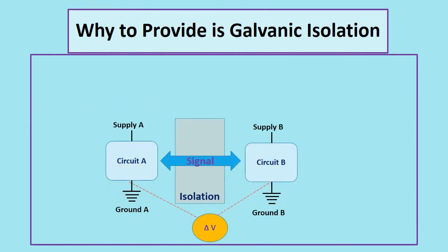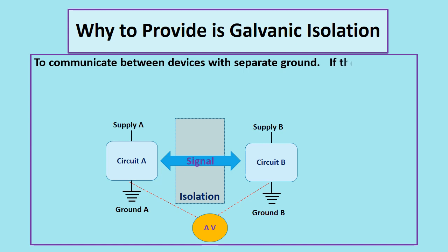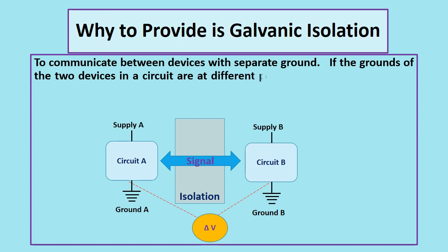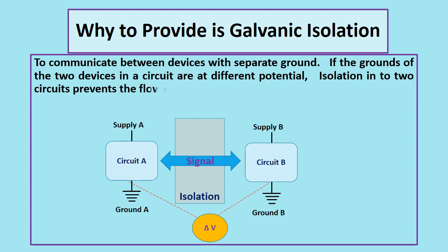The second reason to provide galvanic isolation is to communicate between devices with separate grounds. If the ground of two circuits are at a different potential, the isolation between the two circuits will prevent the flow of stray currents.